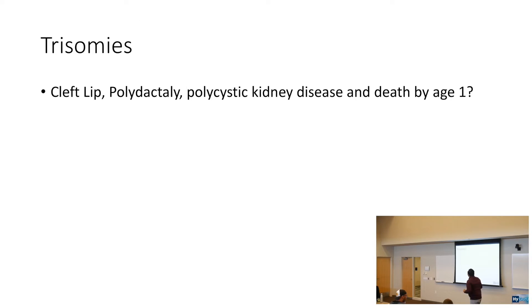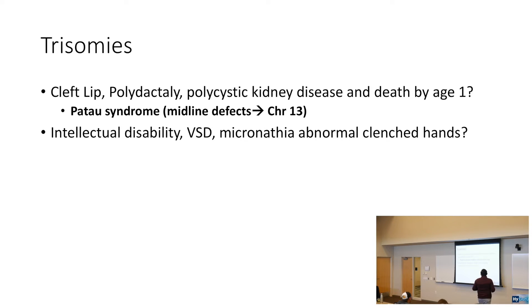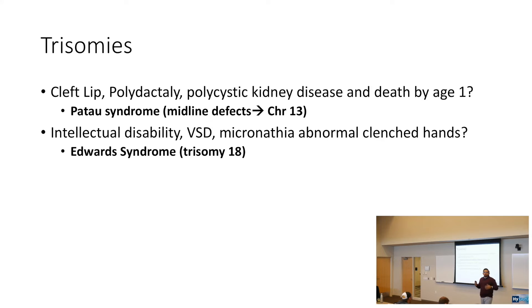Let's integrate trisomies. Cleft palate, polydactyly, polycystic kidney disease, and death by age one — cleft lip, polydactyly, any midline defect — this is Patau syndrome, trisomy 13. Mnemonic: you hit puberty at age 13, Patau is chromosome 13. Intellectual disability, VSD, micrognathia, and abnormal clenched hands — that's Edwards syndrome, trisomy 18. Mnemonic: you elect officials at age 18, Edwards is trisomy 18.